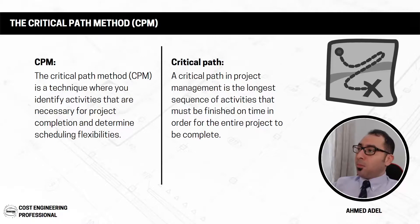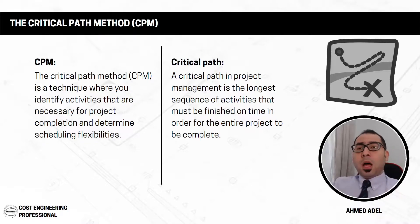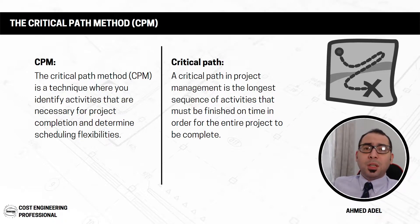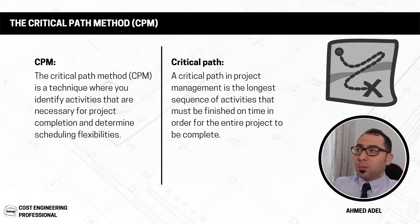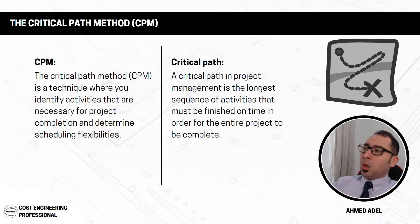What is the critical path method, or CPM? It's a technique where you identify the activities that are necessary for project completion and determine scheduling flexibilities for those activities. So you identify the 30, 40, or 100 things required to complete the building, schedule them based on their relationships, and that is using the critical path method.